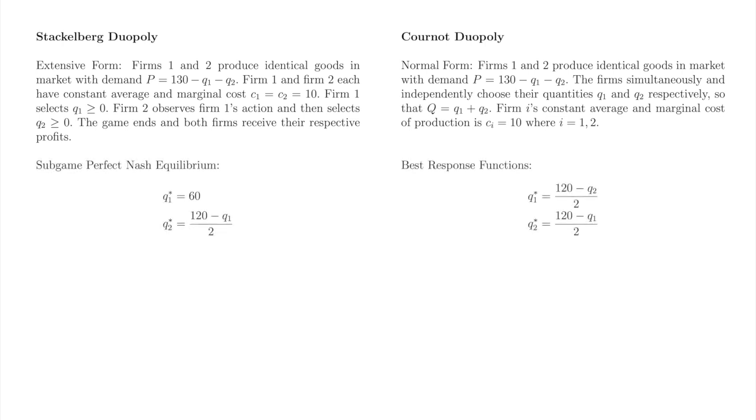Here we have the subgame perfect Nash equilibrium of Stackelberg duopoly next to the best response functions of Cournot duopoly. While the former is in equilibrium and the latter is not, it is good to put them side by side to see how the result of solving firm 2's problem is identical in both games, while the timing of Stackelberg duopoly changes firm 1's decision problem.